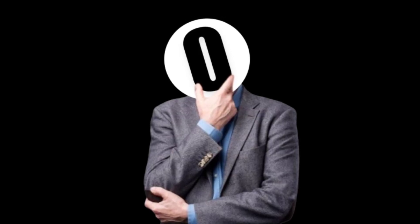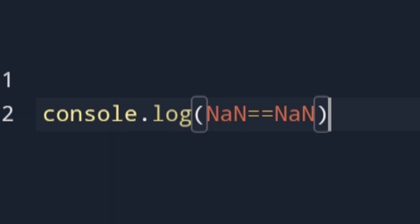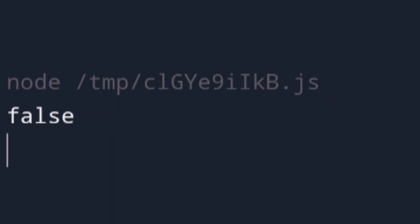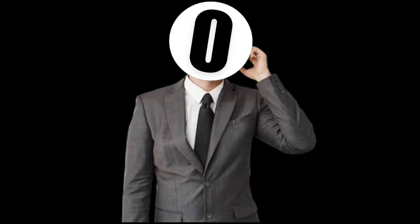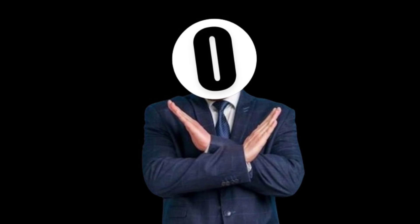So that means NaN is equal to itself. No — NaN is not equal to itself. Why? How? I don't know. Ask the JavaScript interpreter.